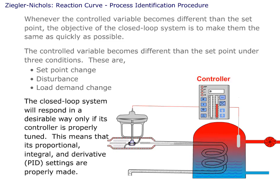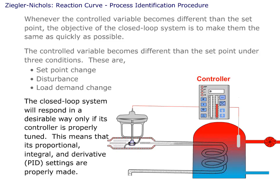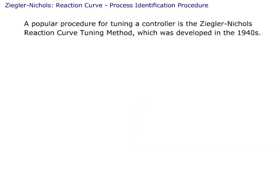The closed loop system will respond in a desirable way only if its controller is properly tuned. This means that its proportional, integral, and derivative settings are properly made. A popular procedure for tuning a controller is the Ziegler-Nichols Reaction Curve tuning method, which was developed in the 1940s.